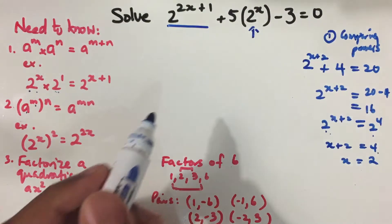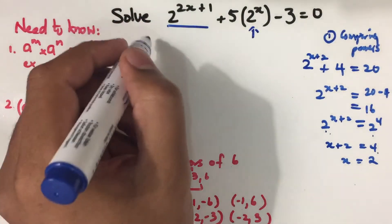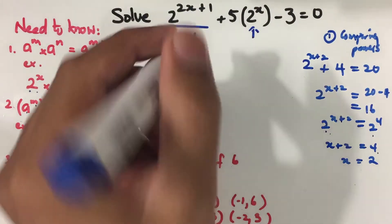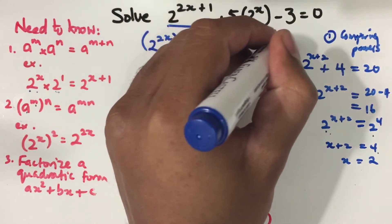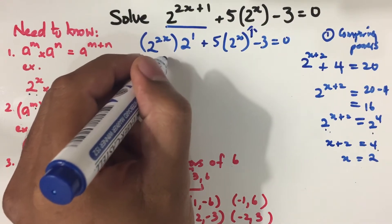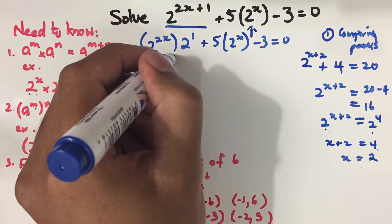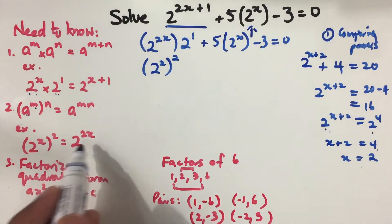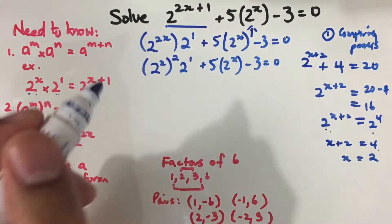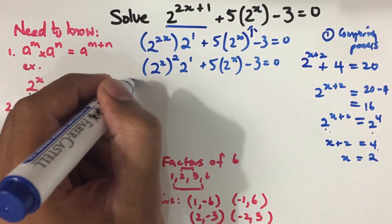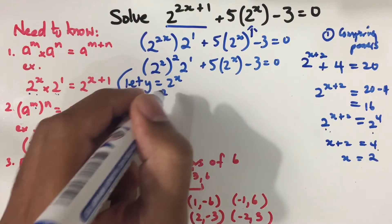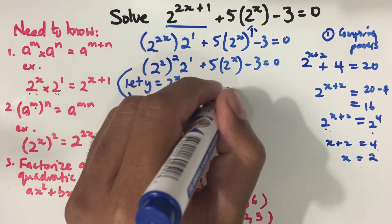Now let's break down the term 2 to the power of 2x plus 1 in terms of 2 to the power of x. Applying the first rule, 2 to the power of 2x times 2 to the power of 1, the original equation becomes: 2 to the power of x squared times 2 plus 5 times 2 to the power of x minus 3 equals 0. Now I can substitute: let y equal 2 to the power of x.